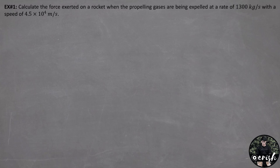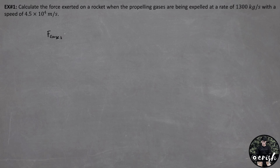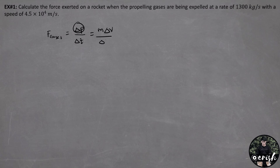Example number one: Calculate the force exerted on a rocket when the propelling gases are being expelled at a rate of 1,300 kg per second with a speed of 4.5 times 10 raised to 4 meters per second. To calculate the force, we use the principle force of the gases, and this is equal to, using the momentum form, the change in momentum over the change in time. The change in momentum is equal to mass times the change in velocity over the change in time.